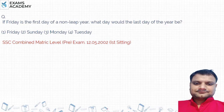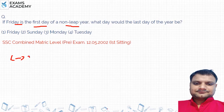What is the question? If Friday is the first day of a non-leap year. Non-leap year means — what comes to mind? A leap year has 366 days and a non-leap year has 365 days.